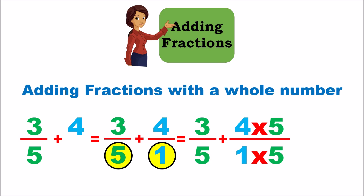Now we can add them like we did in the first example with like denominators. 4 times 5 is 20, plus 3 is 23, divided by 5. That's how you add a fraction with a whole number. I hope you found this interesting — if you did, please give it a thumbs up, and if you'd like to see more videos like this, please subscribe. Thank you.